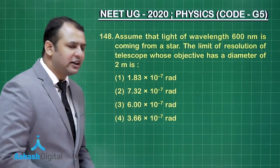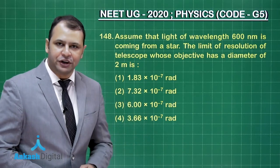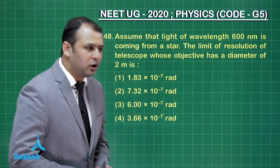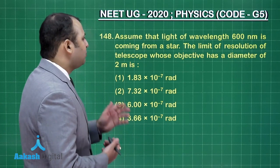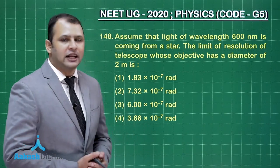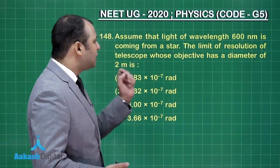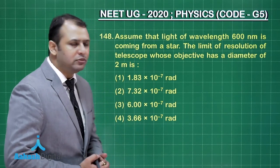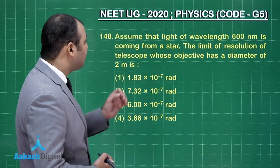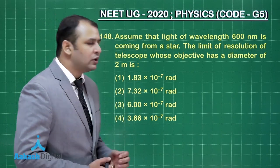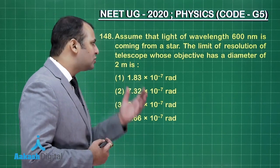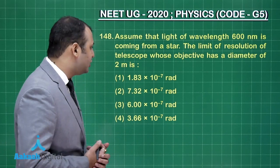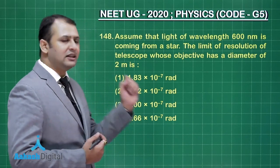Let's take our next question, that is question number 148. This question belongs to chapter ray optics, from the topic telescope. Assume that the light of wavelength 600 nanometers is coming from a star. The limit of resolution of a telescope whose objective has a diameter of 2 meters is to be found.